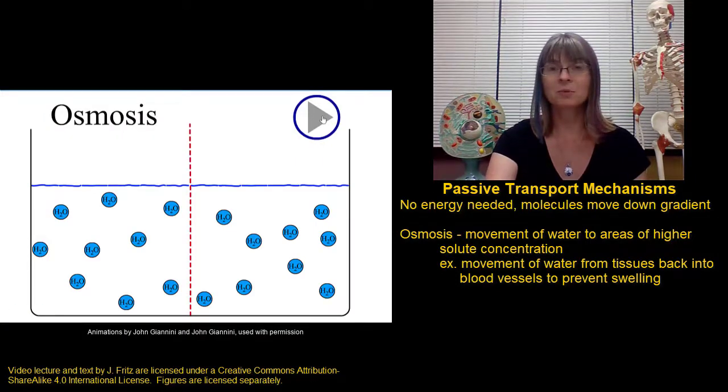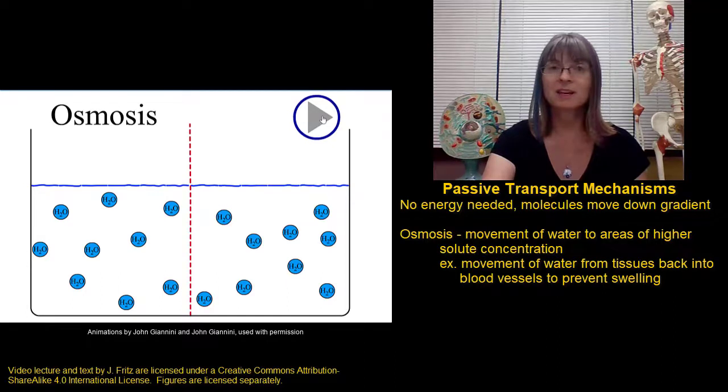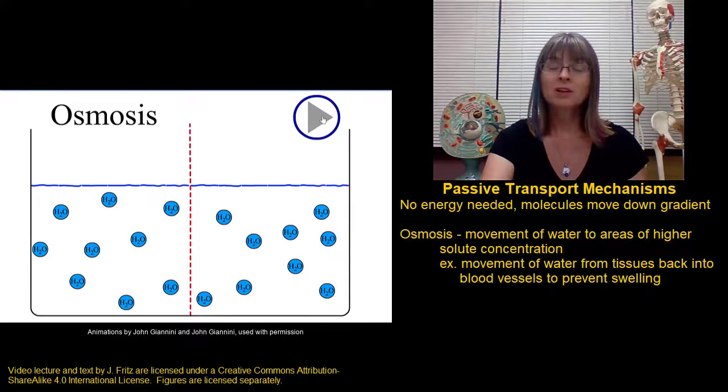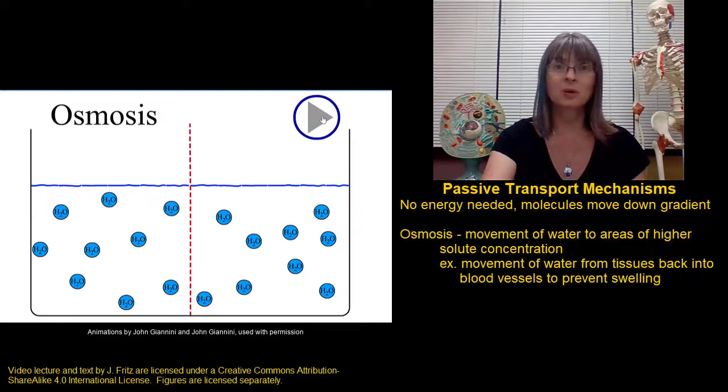Here's an animation that shows osmosis. At first, you'll see the water molecules move randomly back and forth across the membrane. But once salt is added to one side of the membrane, then the water molecules are attracted to the salt, and more of them move over to the side of the membrane with salt.